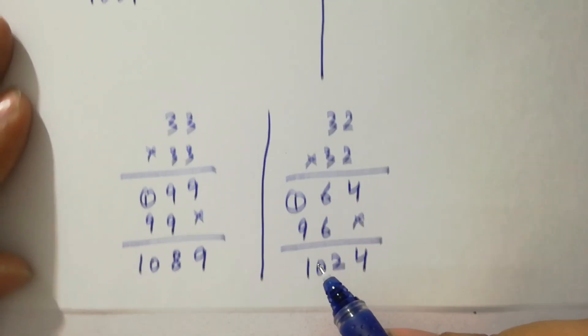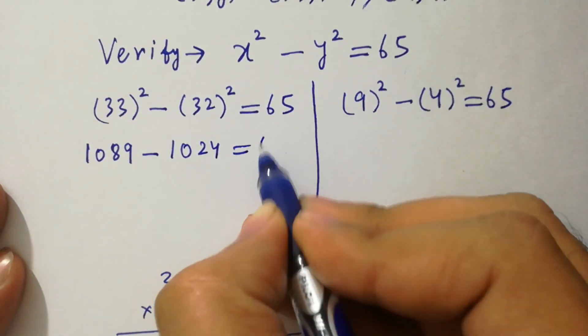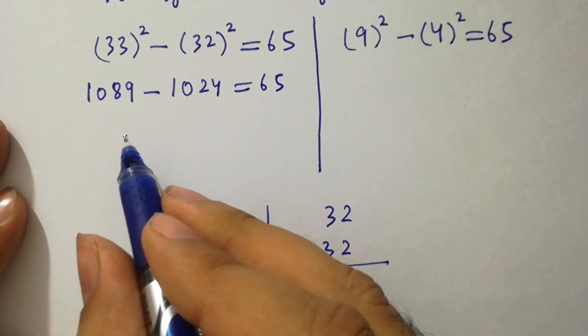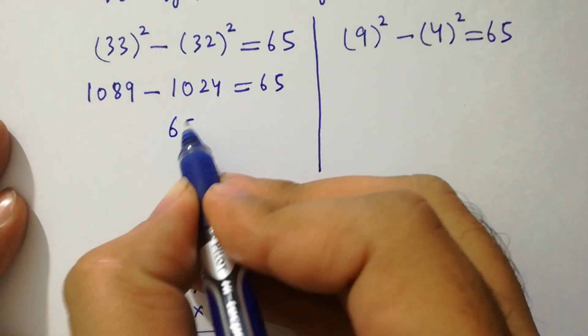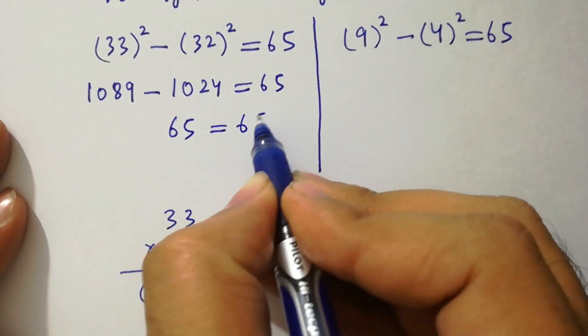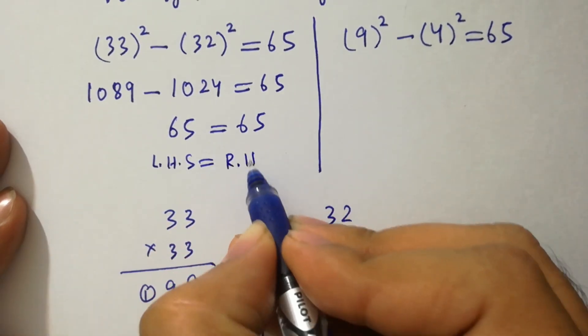So it will be 1024. 1024 equal to 65. And 1089 minus 1024 equal to 65. Left hand side equal to right hand side.